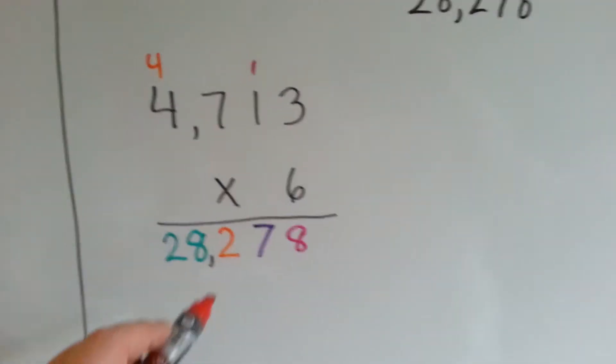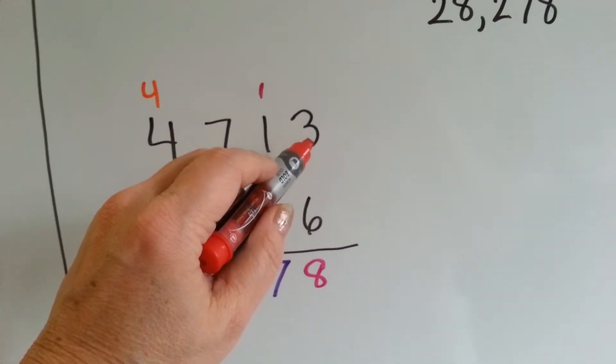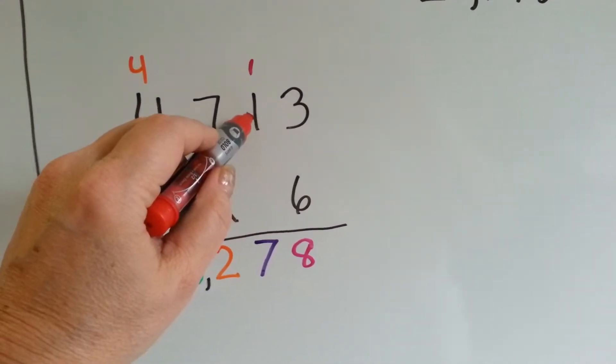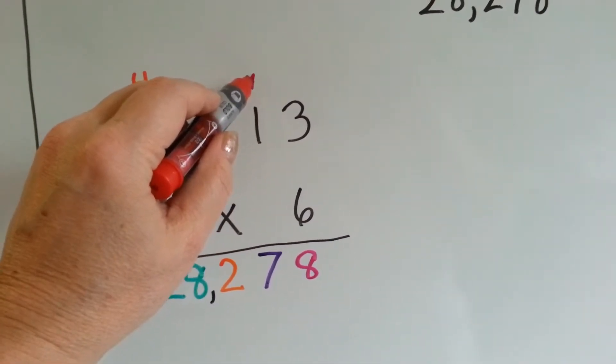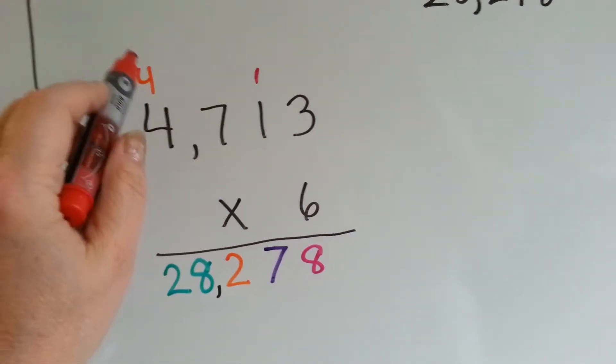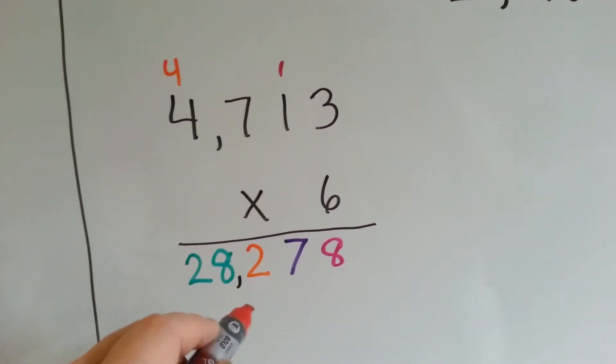Now, this is the way we would do it by distributing the 6. 6 times 3 is 18. We carry the 1 and put the 8 down. 6 times 1 is 6, plus 1 is 7. Now, remember, whenever we carry over, we add that 1. We don't multiply it. We multiply, and then we add the carried over one.